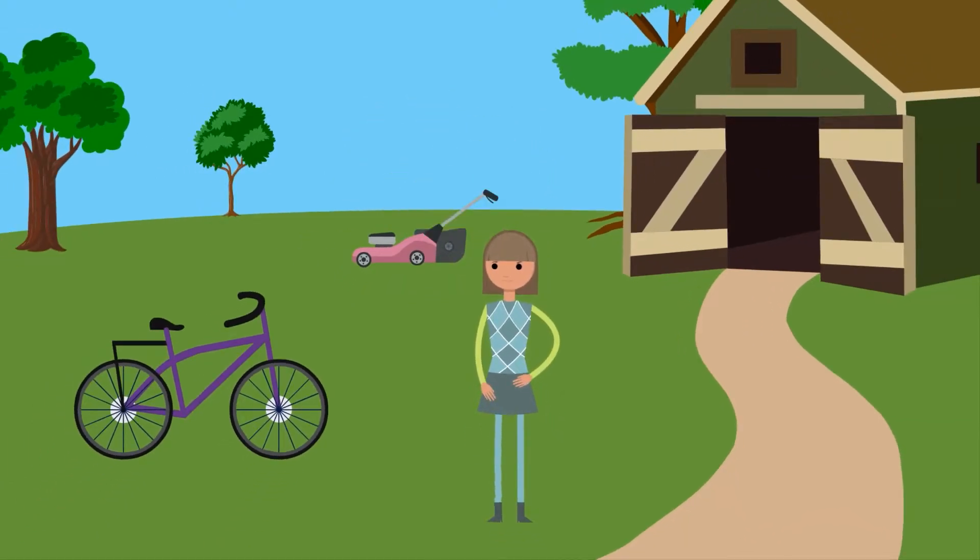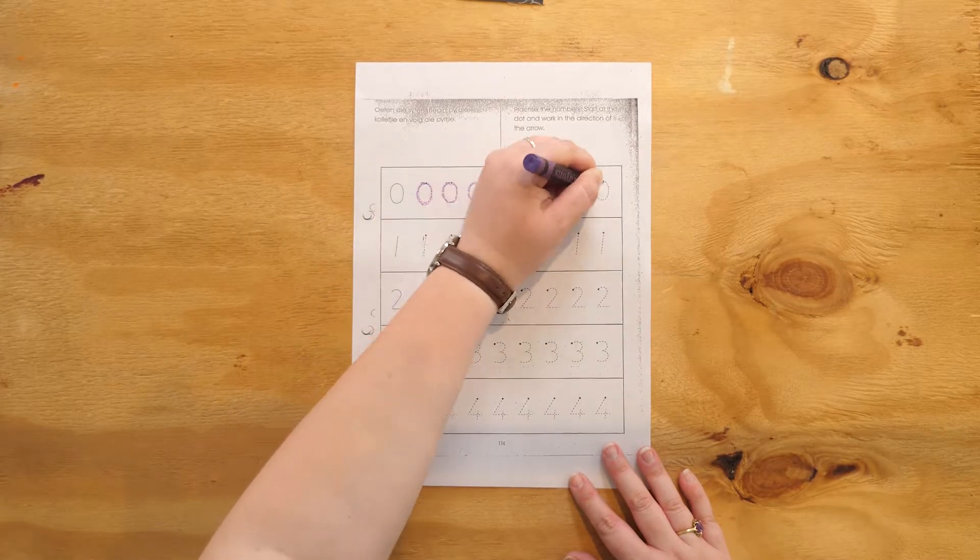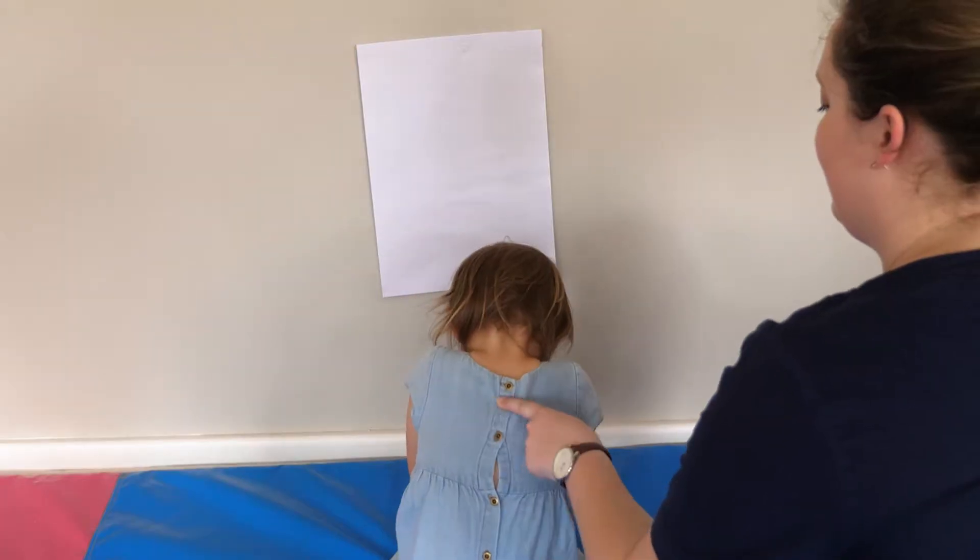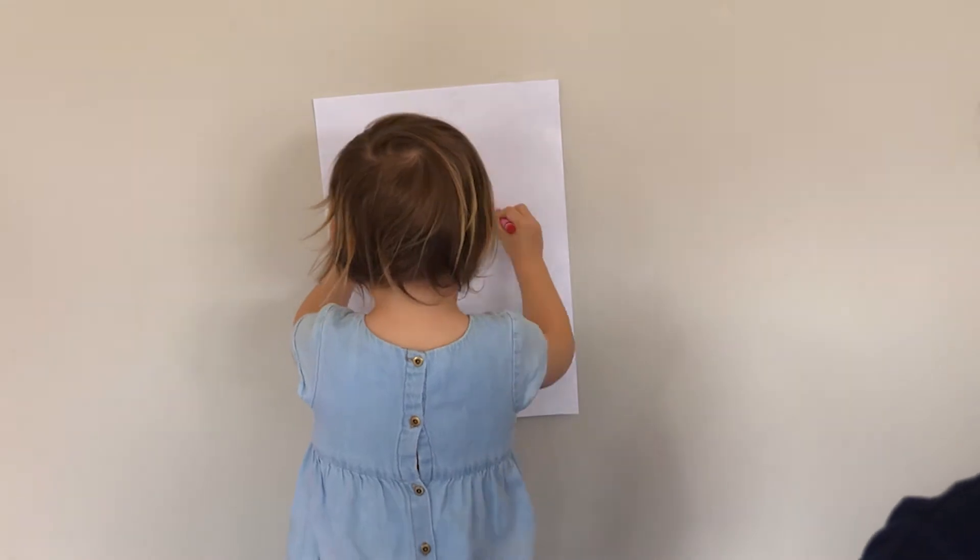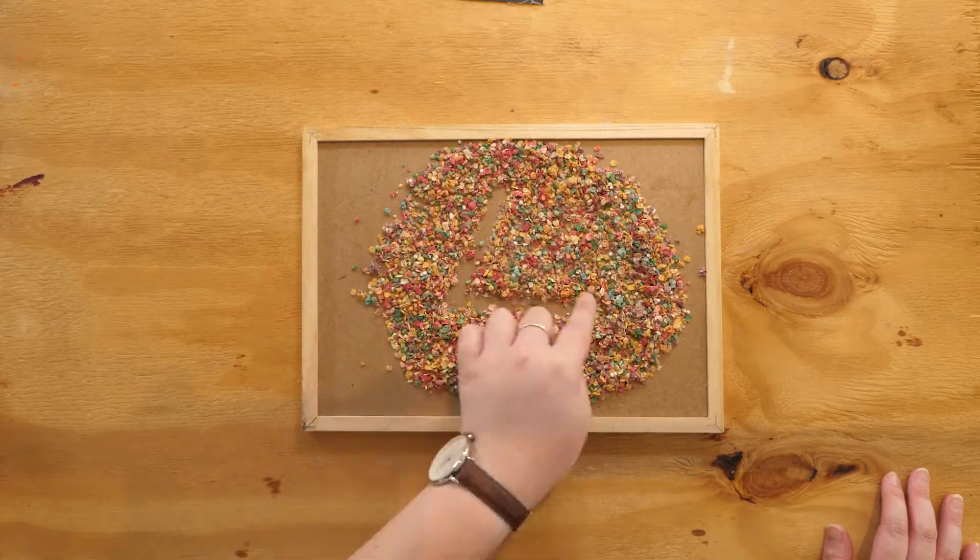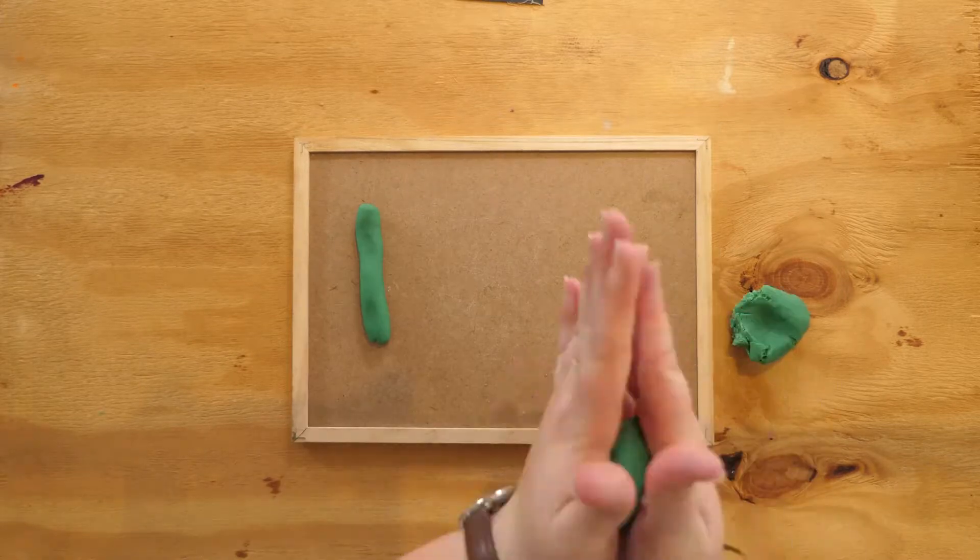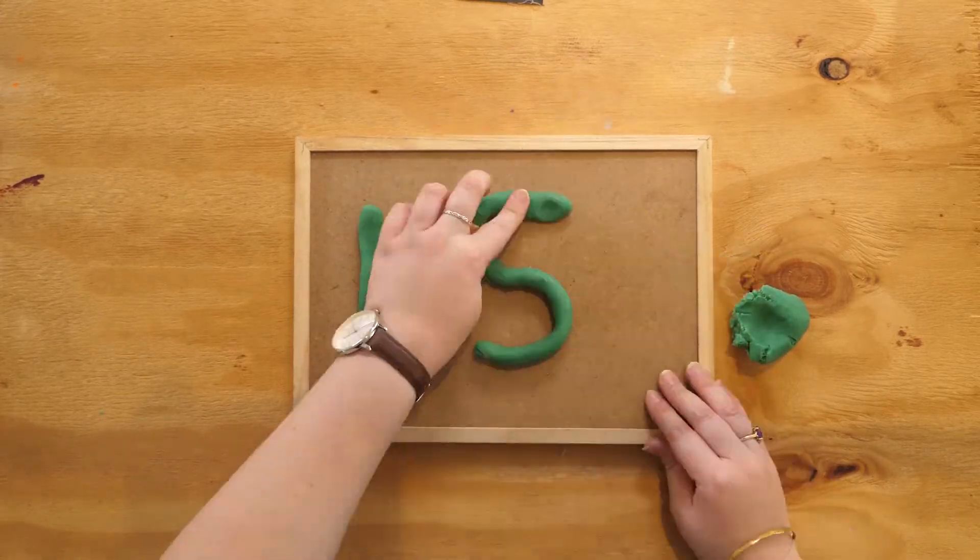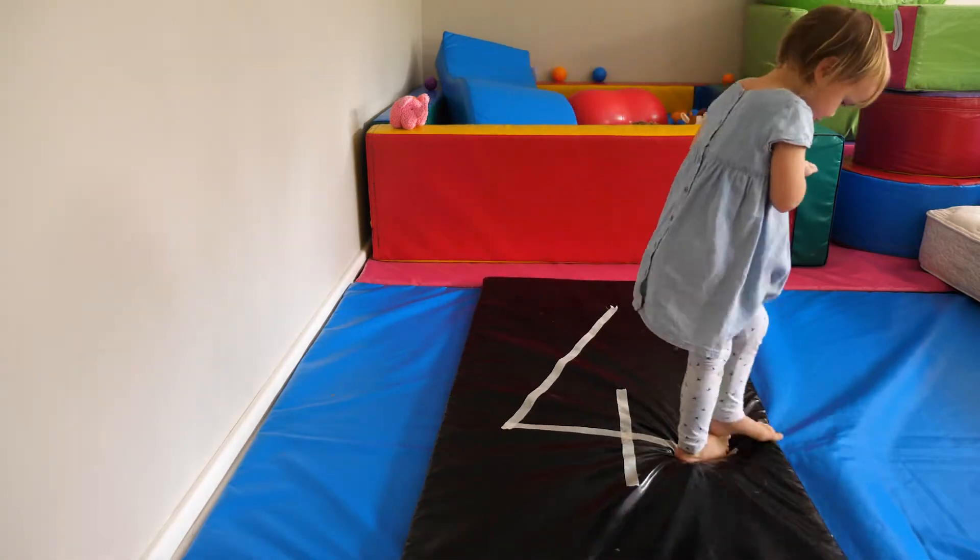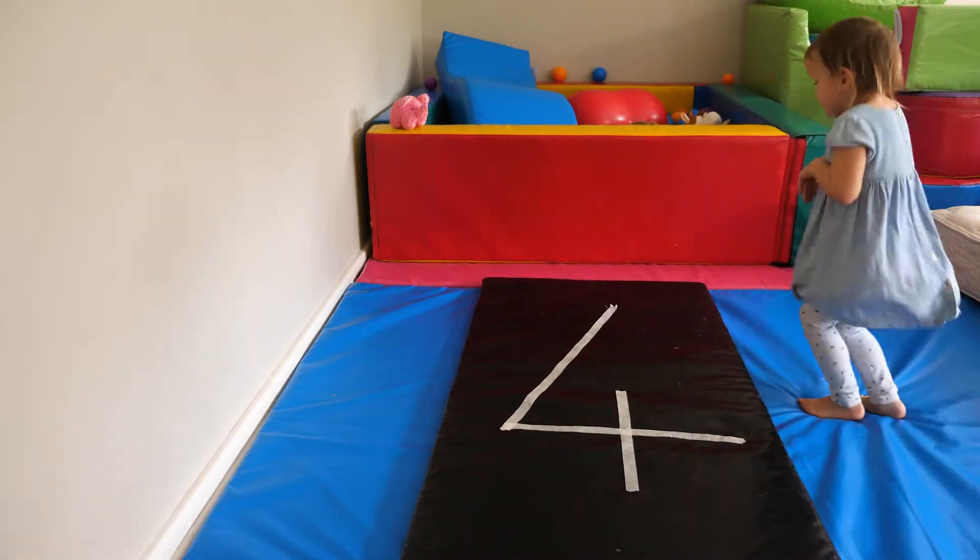Some fun ideas to develop number formations include tracing numbers, writing numbers on the child's back and getting them to rewrite these, forming numbers in textures, building numbers with play-doh, and whole body movements where you draw numbers either on the pavement or make a number with masking tape on carpet and then having your child jump on the lines.